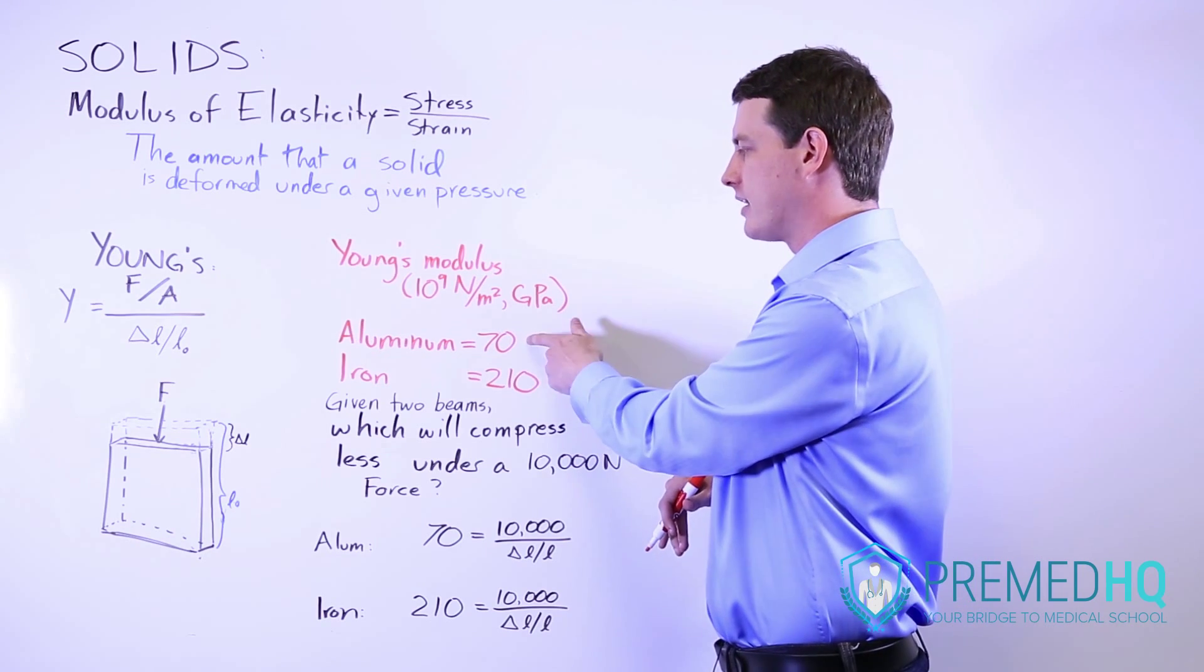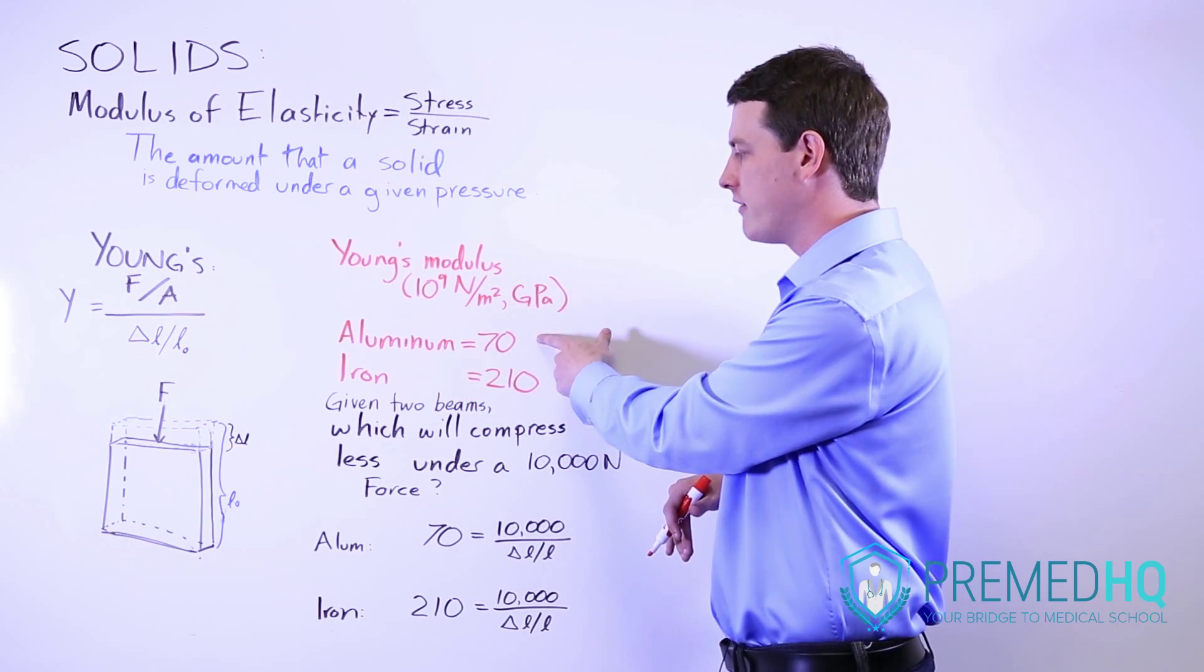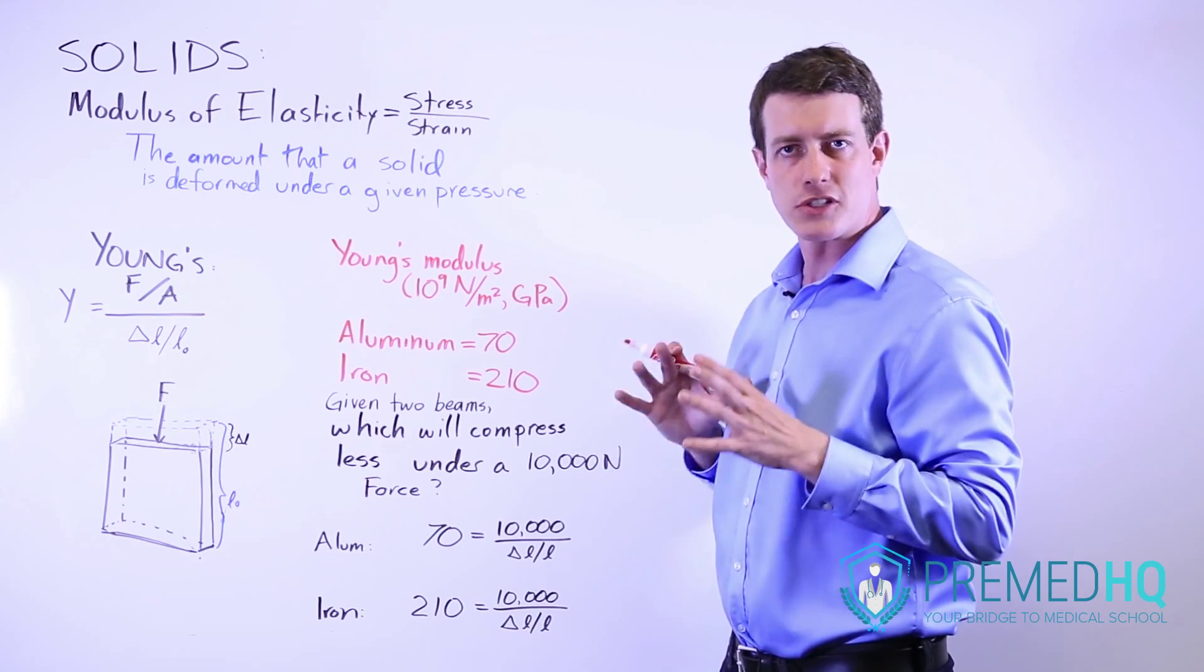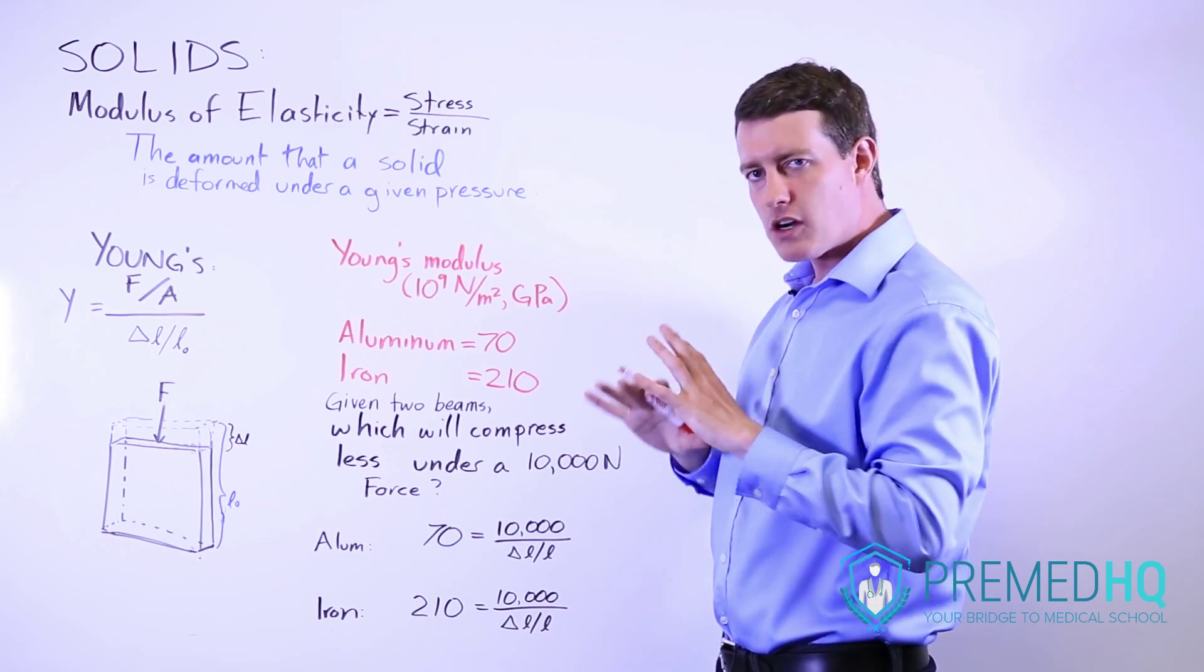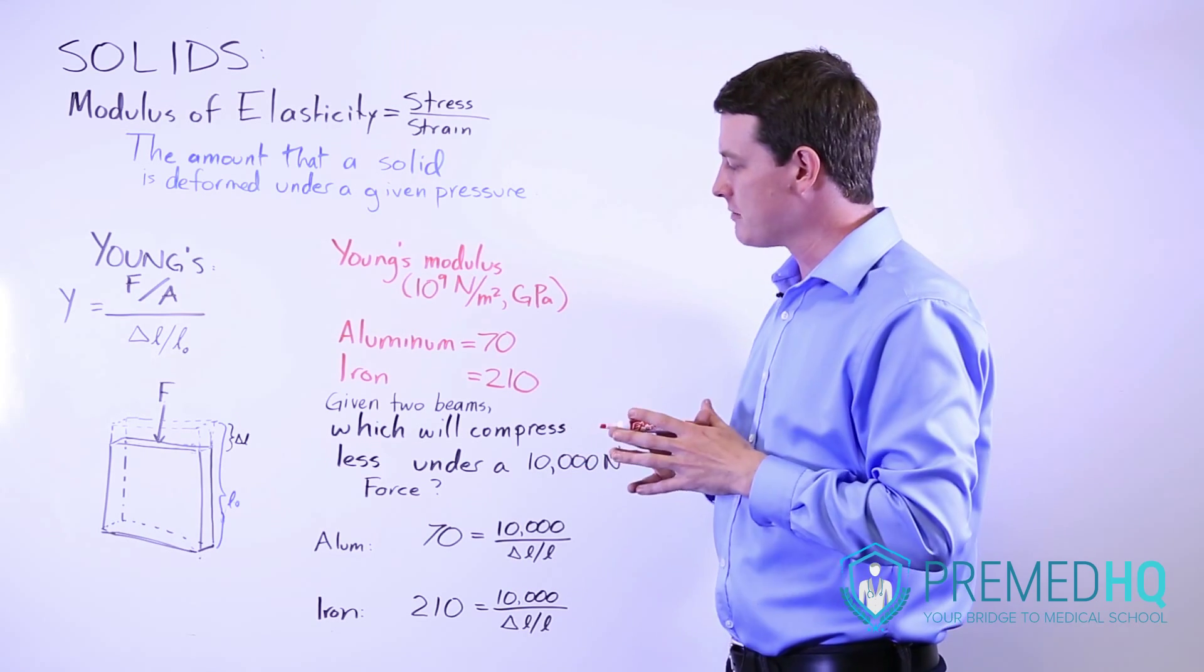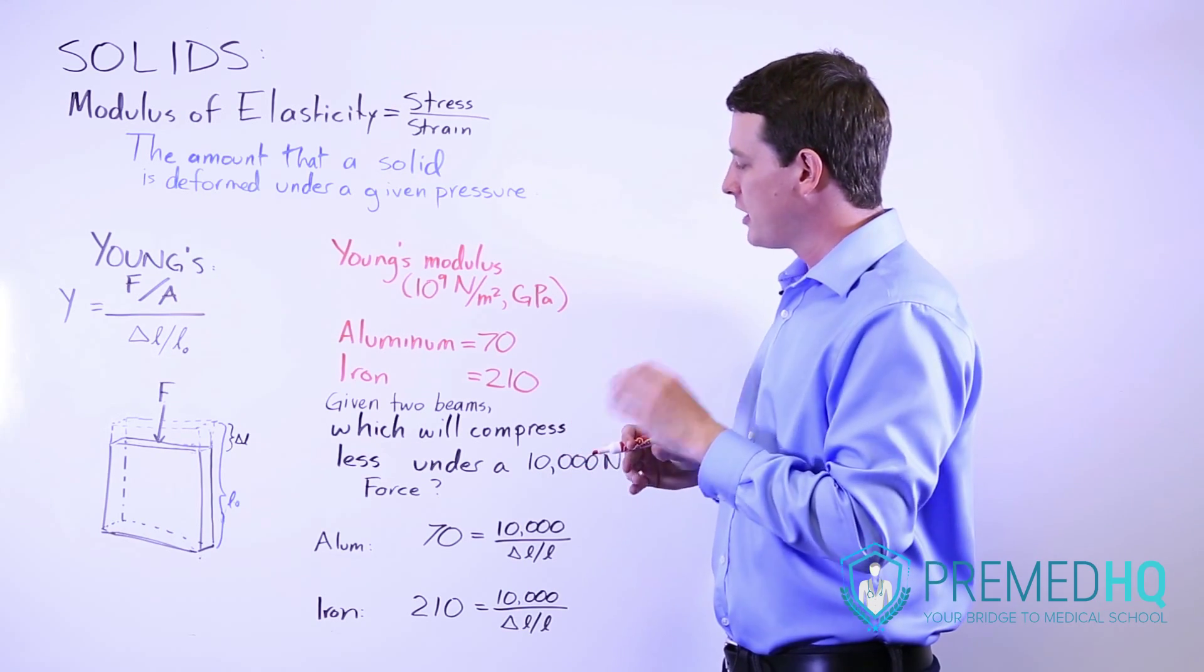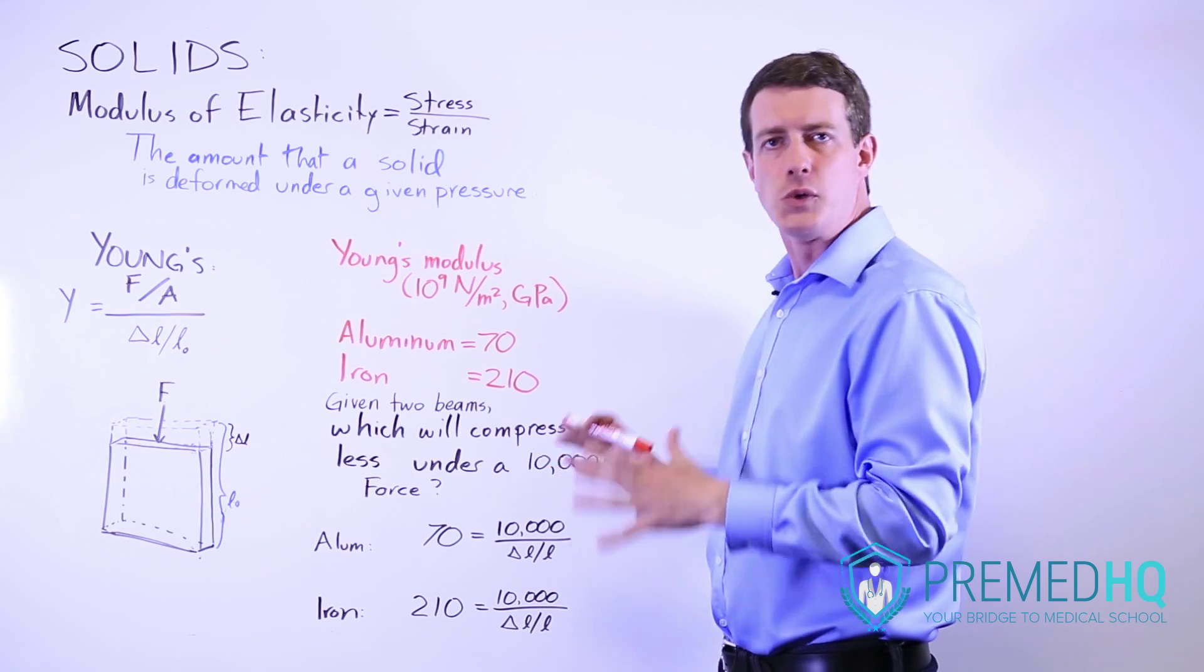We've been provided that aluminum has a Young's modulus of 70 and iron has a Young's modulus of 210 and the question is given two beams and these beams are equal in all these different dimensions which of them will compress less under a 10,000 Newton force?